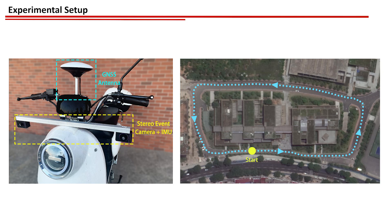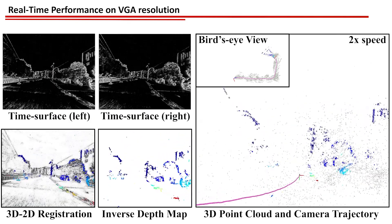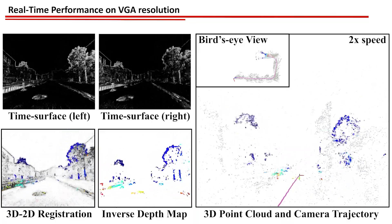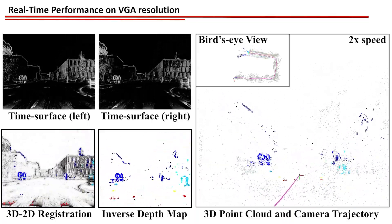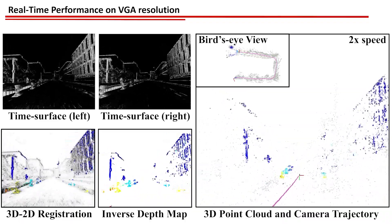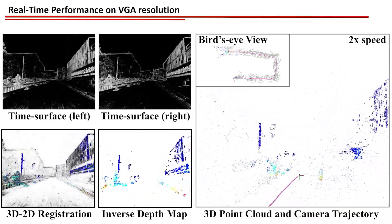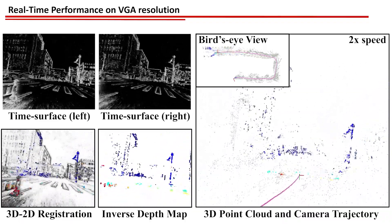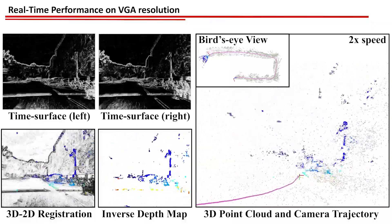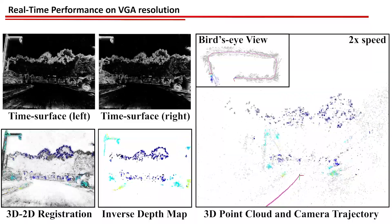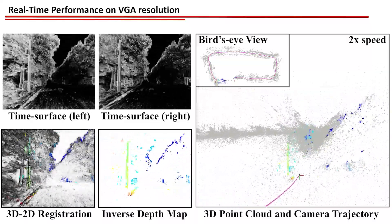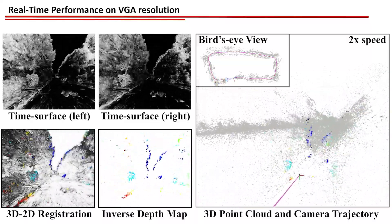To assess the performance of our system, we collect our own outdoor dataset for evaluation. At the same time, extensive evaluations on five publicly available datasets featuring different resolutions and scenarios justify the superior performance of the proposed system against five state-of-the-art methods. The better-estimated IMU biases and linear velocities at recent poses facilitate camera pose tracking, thus leading to a notable improvement in tracking accuracy.